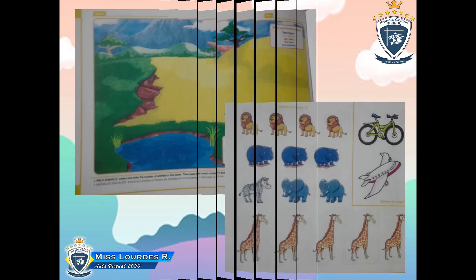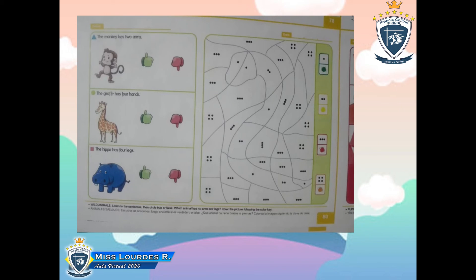And that's it! On the next page, what do you have to do? You have to choose — for example, the first one says: the monkey has two arms. What do you think — yes or no? Yes, two arms! You have to choose: acá tienes que elegir, yes or no? And then you have to color according to the pictures indicated.